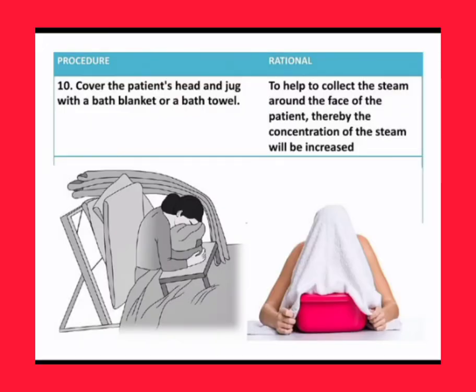Step ten: cover the patient's head and the jug with the bath blanket or bath towel. Rationale: this helps to collect the steam around the face of the patient, thereby increasing the concentration of the steam.